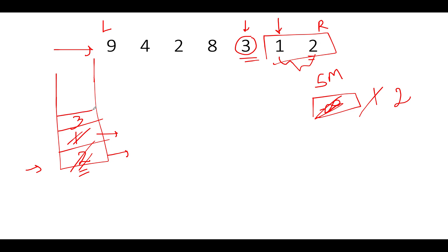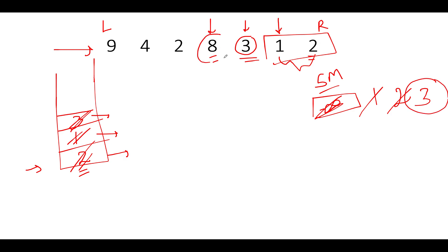Next we move left and see element 8. We compare 8 with the topmost element of the stack, which is 3. Since 8 is greater than 3, we pop 3 out. We compare 3 with sm (currently 2) — 3 is greater, so sm is updated to 3. This means 8 is now acting as a peak. We have identified the second max across the subarray [3, 1, 2] as 3. The stack now holds 8.